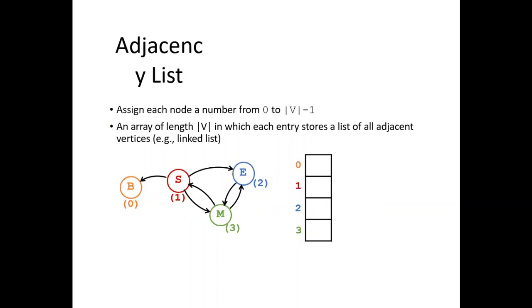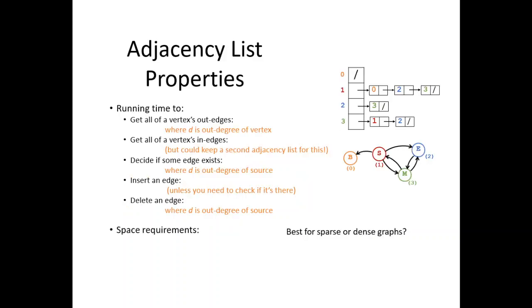We have adjacency list. We have to assign each node a number from 0 to V minus 1. We have an array of length V in which each entry stores a list of all the adjacent vertices. Adjacency list properties: We have the running time to get all vertices of the edge, where D is the degree of vertex. We have to get all vertices in the edges. To decide if an edge exists, insert or delete.